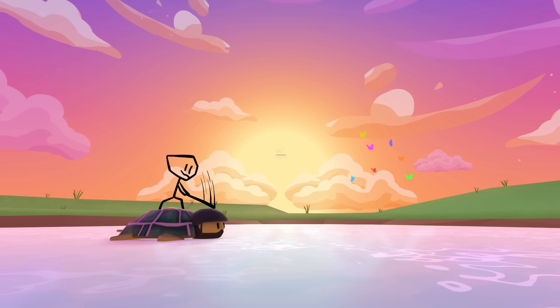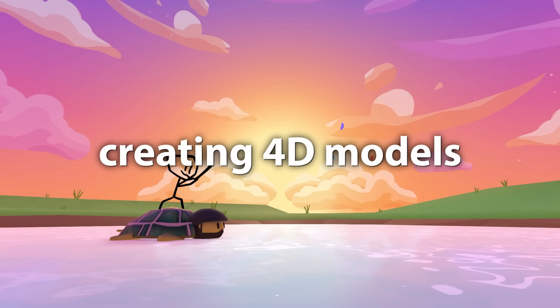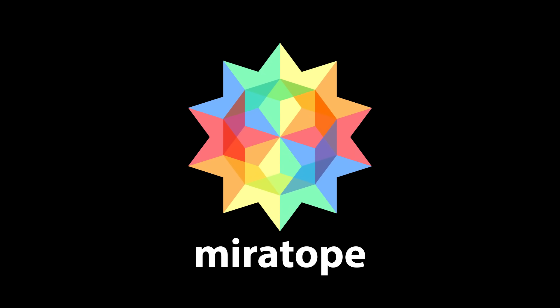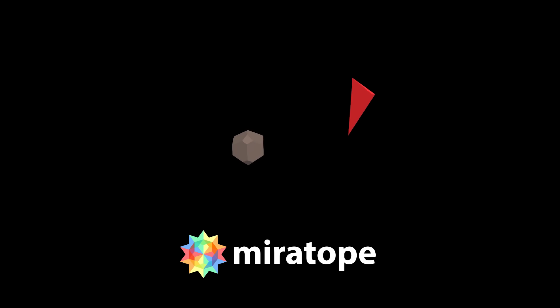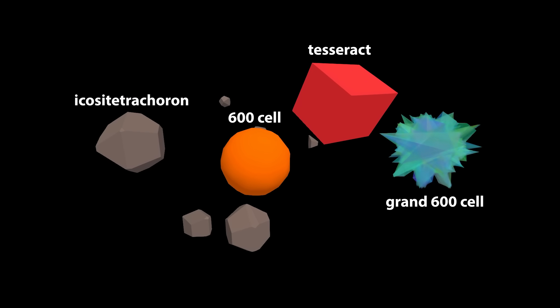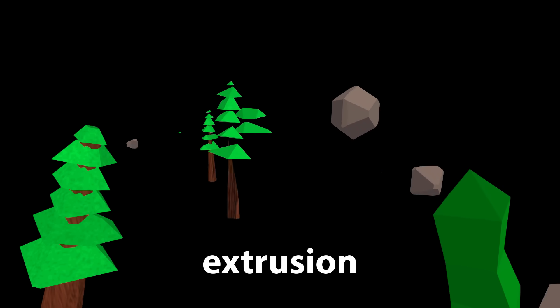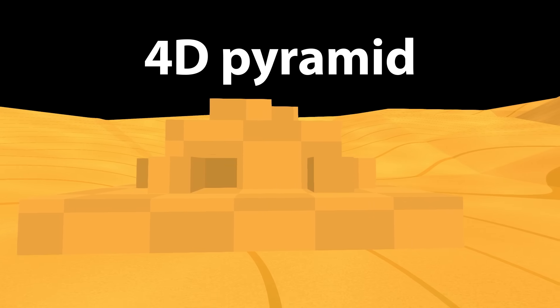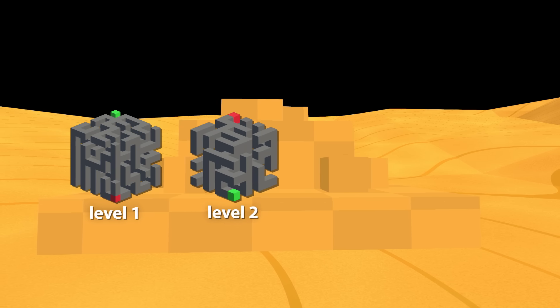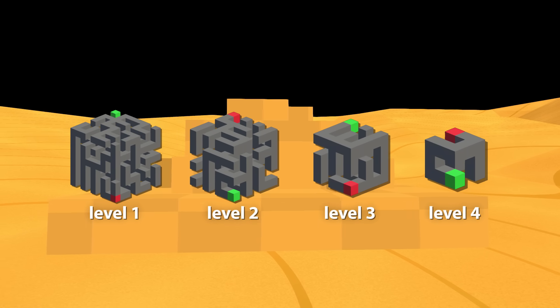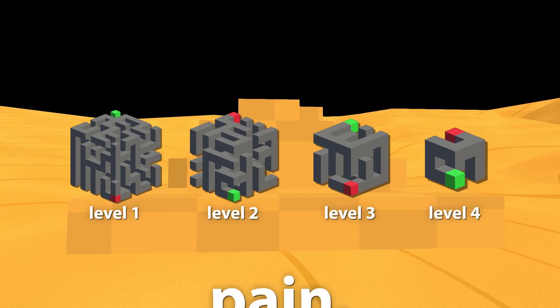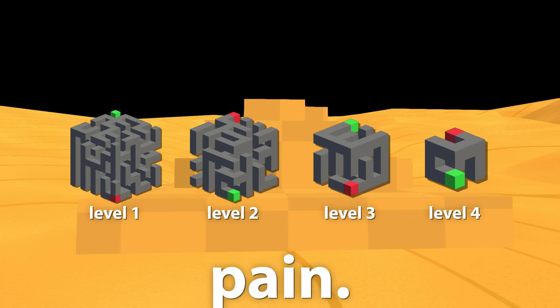Finally, I need to actually create the 4D models. You do have a program called Mirotope which can generate some 4D primitives, but in general I made most of my models using custom scripts. This included extrusion, procedural terrain, and even creating a 4D pyramid — which involved generating 3D mazes for each level and making sure they were connected. Yeah, this was not fun. Let's talk about physics. This was even less fun.